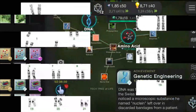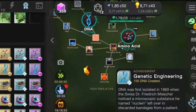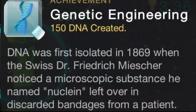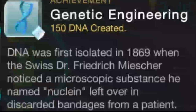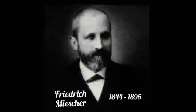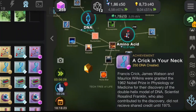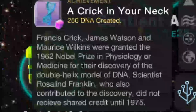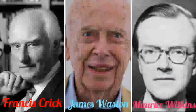DNA strands come together to form tight coils to create a chromosome. Humans have 23 pairs for a total of 46 chromosomes. DNA was first isolated in 1869 when Swiss doctor Friedrich Miescher noticed a microscopic substance he named nuclein, leftover in discarded bandages from a patient. Francis Crick, James Watson, and Maurice Wilkins were granted the 1962 Nobel Prize in Physiology or Medicine for their discovery of the double helix model of DNA. Scientist Rosalind Franklin, who also contributed to the discovery, did not receive shared credit until 1975.